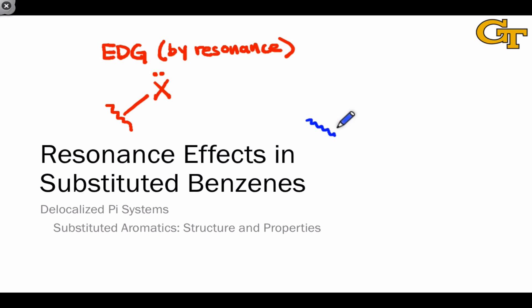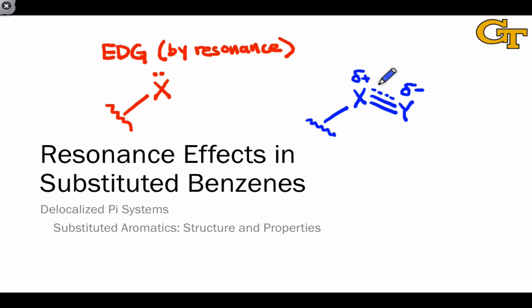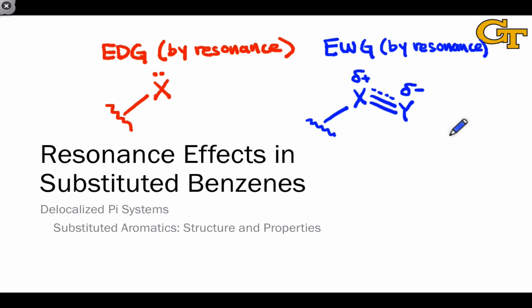We previously also defined the nature of a general electron withdrawing group as something containing an X-Y double or triple bond where the Y atom, distant from the aromatic pi system, is more electronegative than the X atom, so that the X-Y bond is polarized in this way. Because we can draw curved arrows involving pi electrons within the aromatic and these pi electrons in the X-Y bond that leave positive charge within the aromatic pi system, these groups are electron withdrawing groups by resonance. In this video, we'll see specific examples of resonance donating and withdrawing groups, see in detail the exact positions in terms of ortho, meta, and para that are modified in electron density, and we'll address which is stronger — resonance effects or inductive effects.